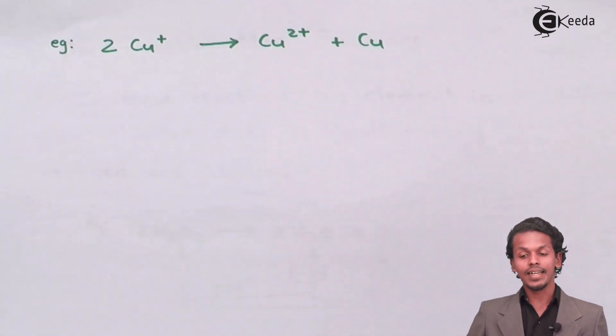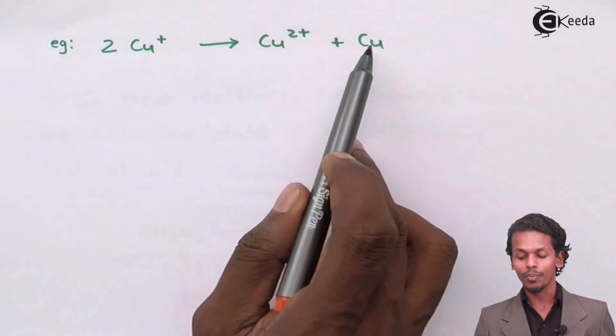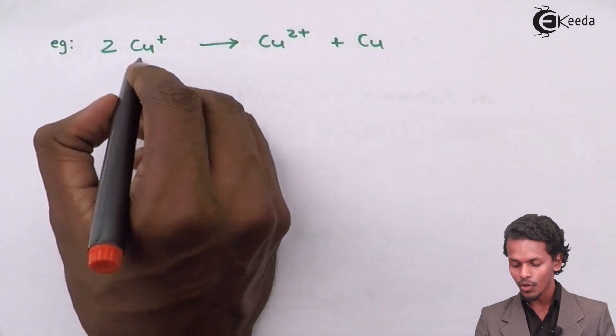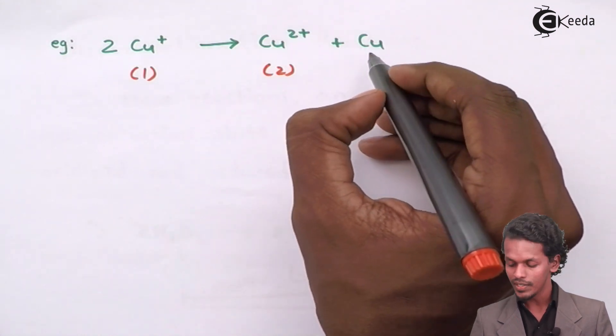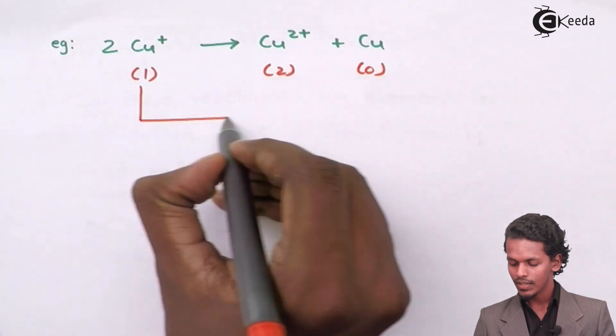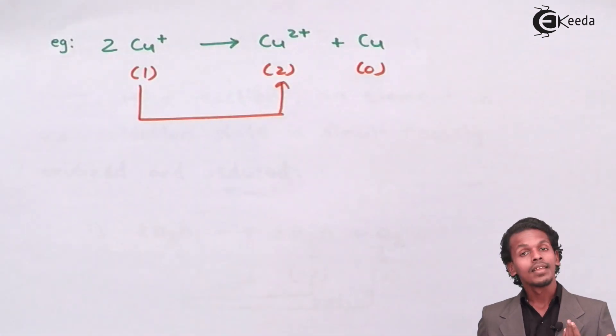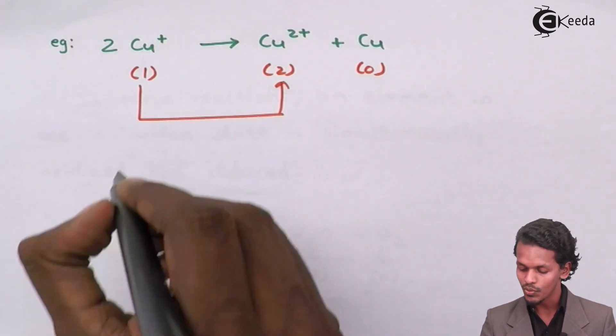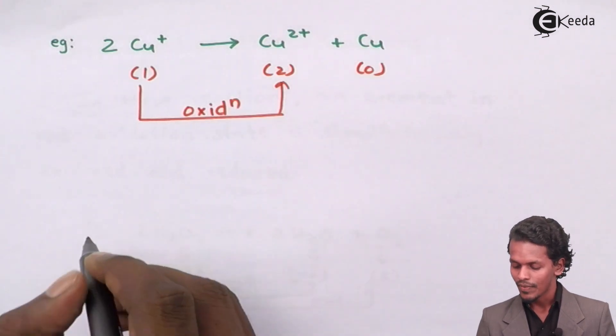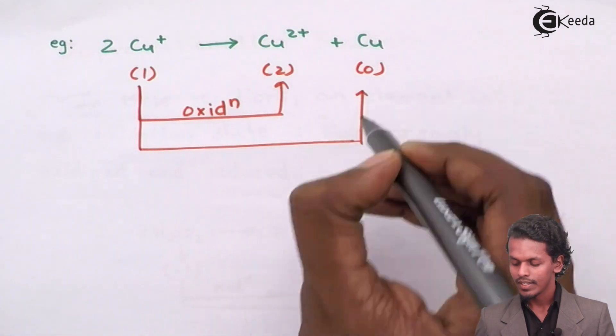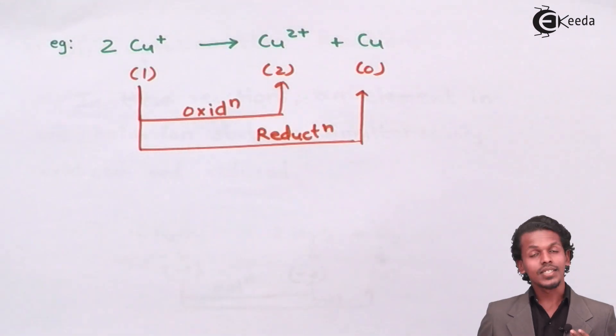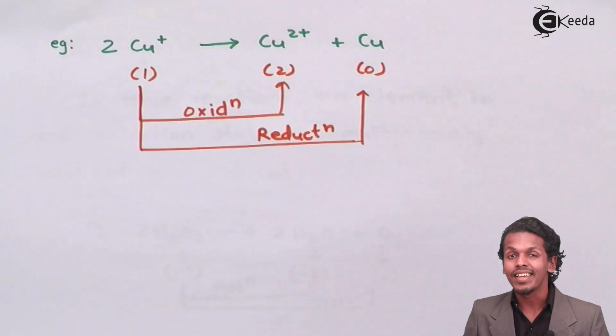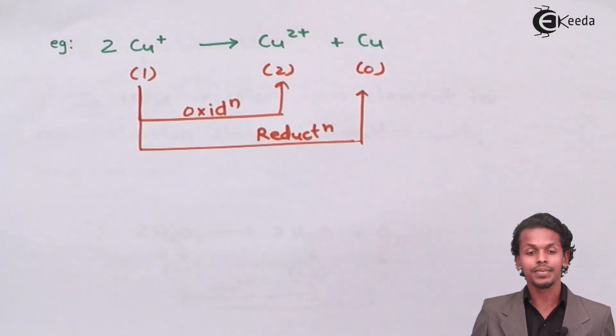I have mentioned that the copper plus ion is converted into Cu2+ plus copper. So the oxidation number of copper in this case is 1. While in this case is 2. And in this case, because there is no charge present on this elemental form of copper, so it is 0. So this copper is converted into Cu2+ by increasing the oxidation number from 1 to 2. So therefore, this is oxidation reaction. While the same is converted into 0 oxidation number, which means it has accepted electron and hence it is showing the process of reduction. So the same element is showing different oxidation in a reaction and hence this kind of reaction is known as disproportionation reaction.